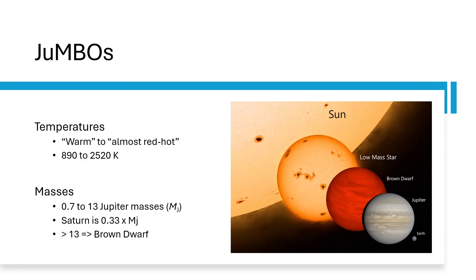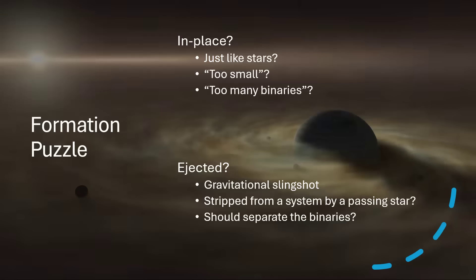Now the question is, where do these things come from? Are they formed just like stars in situ on their own self-gravity, pulling little knots of material in the nebula together? Or perhaps they're too small for that? Perhaps there are too many binaries? It did seem like 9% turning up as binaries was too many for that sort of formation.